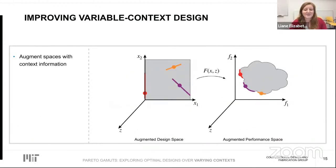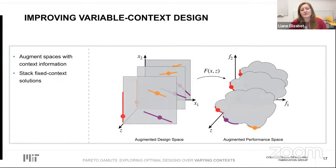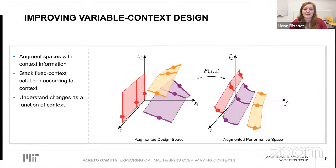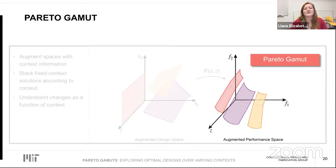To organize these many Pareto sets and fronts, we imagine augmenting our design and performance spaces with an additional axis for each context. As we discover each Pareto set and front, we stack them along these additional axes according to their context values. As we collect more fronts, a clear dependence emerges characterizing how the Pareto set and front change as a function of the smooth context. The union of all Pareto fronts is what we define as the Pareto gamut. The central technical challenge is to discover the full Pareto gamut directly rather than building it one fixed-context slice at a time.